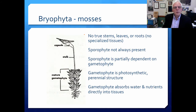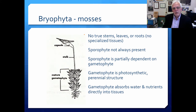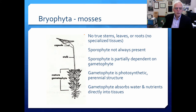The next group I'd like to talk about are the bryophytes, or mosses. The bryophytes are some of the macrophytes found to the greatest depths in aquatic ecosystems. They have no true stems, leaves, or roots, and basically no really specialized tissue. There's a sporophyte, which is not always present and is partially dependent on the gametophyte. The mature gametophyte is photosynthetic — it's the photosynthetic perennial structure — and it absorbs water and nutrients directly into the tissues.